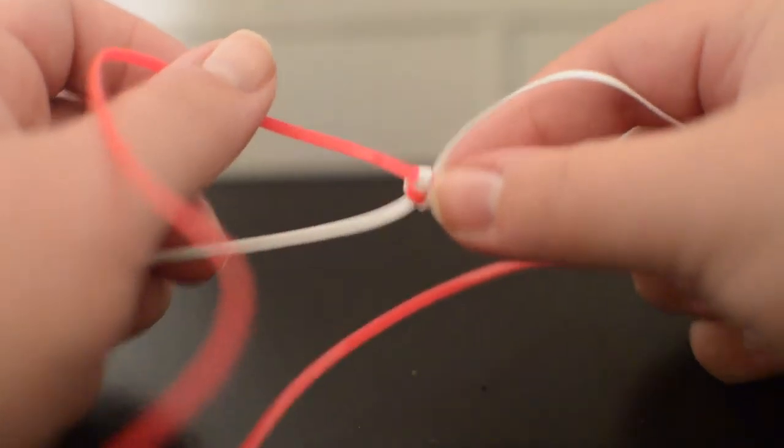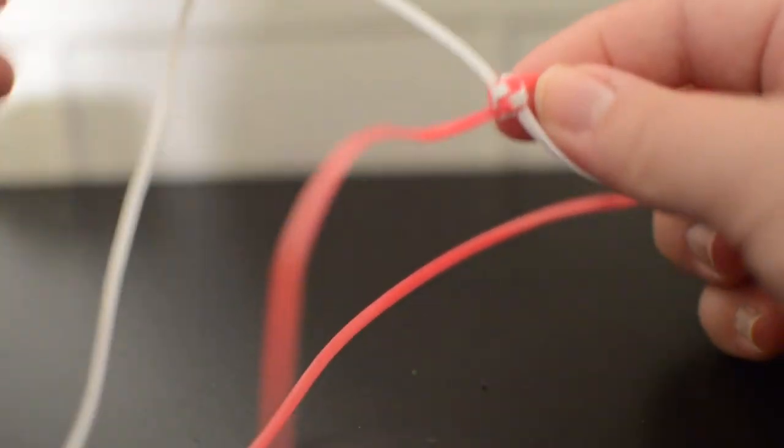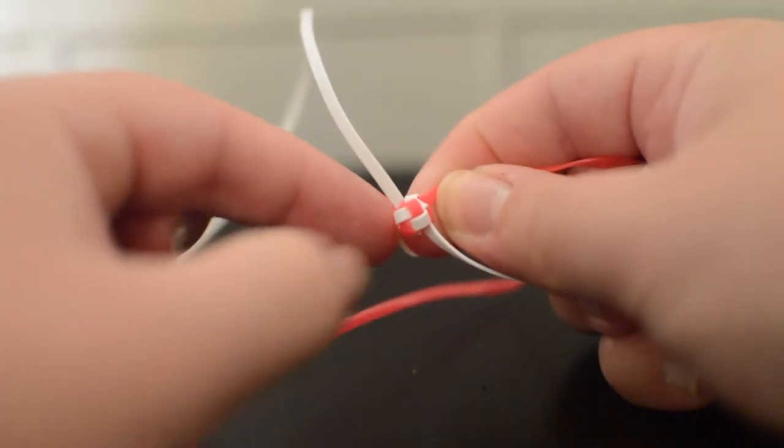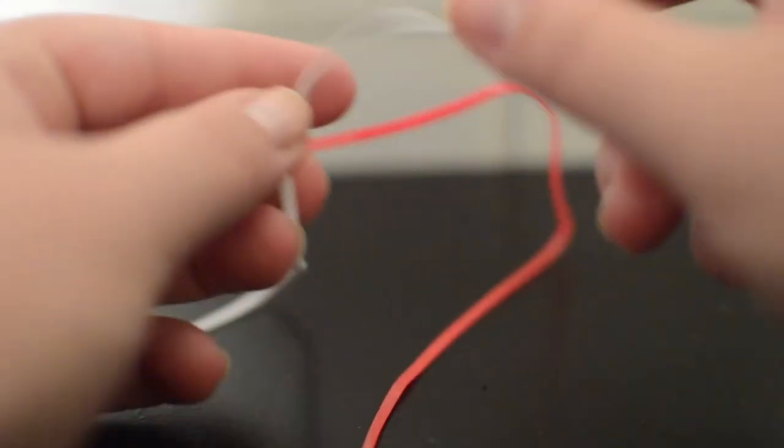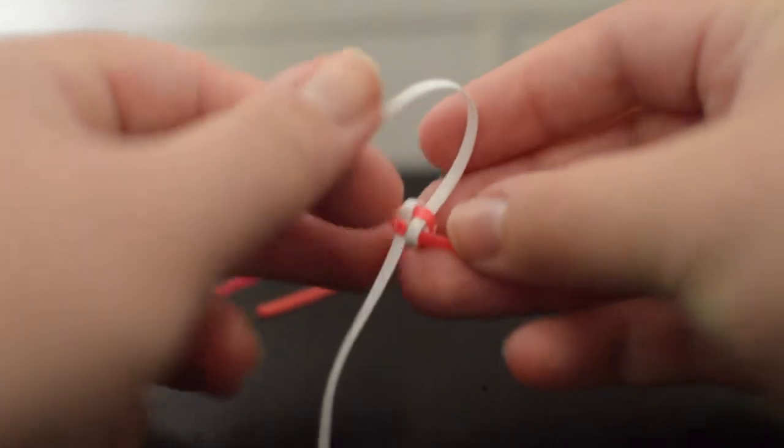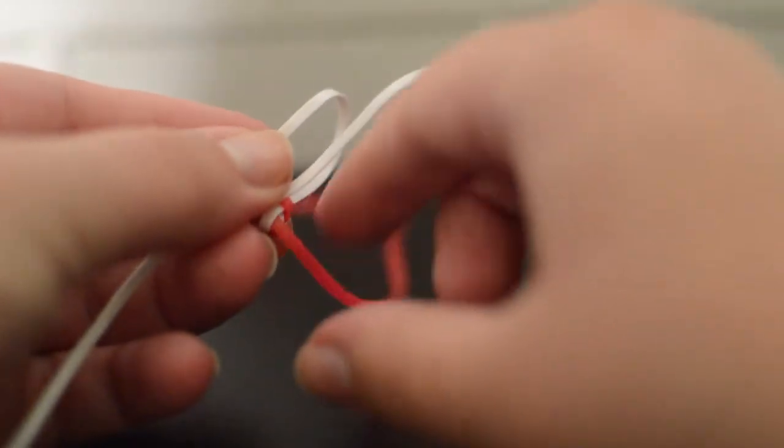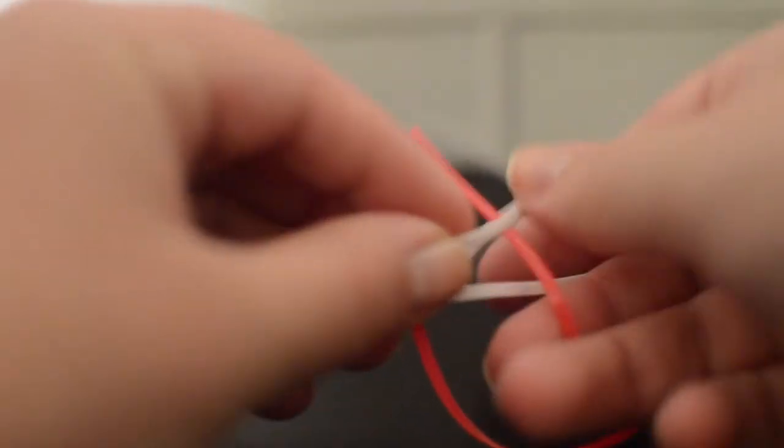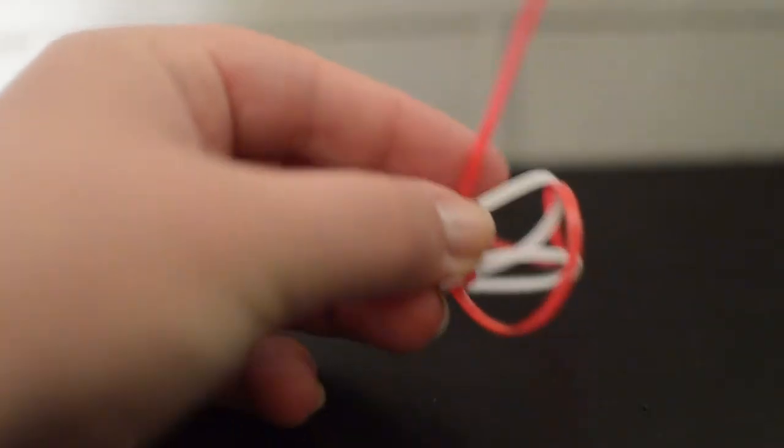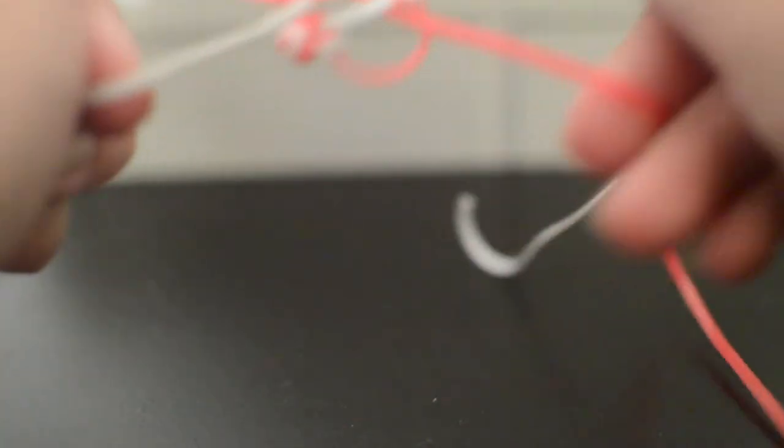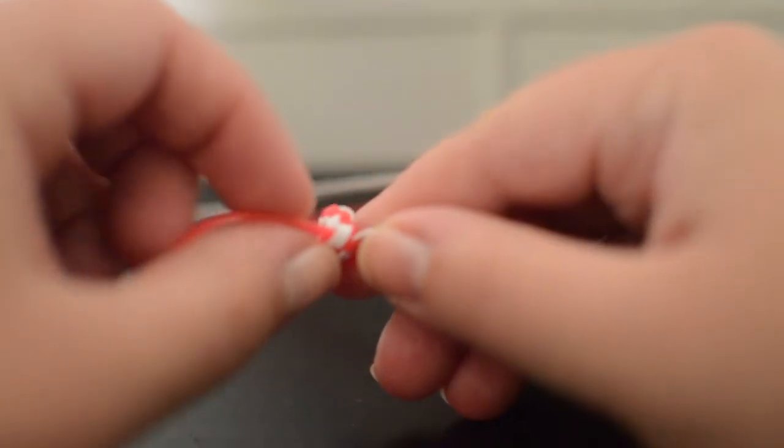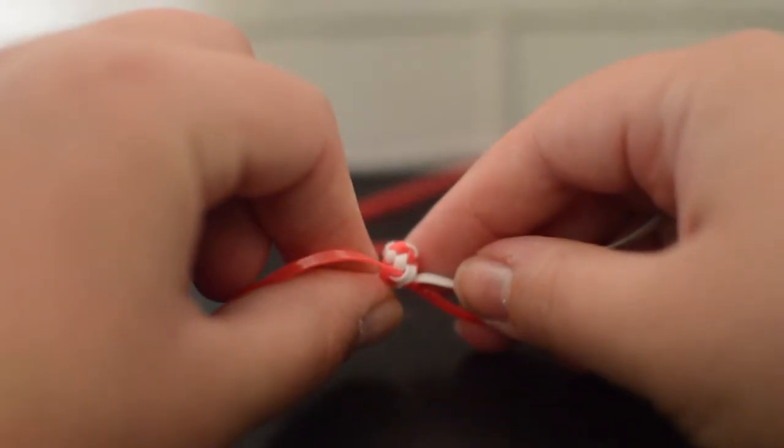Now you've got this nice boxy looking stitch on the top and it's going to start going to the side. So I'm going to do that again where I go to this side and then I go to that side. I take my one across from here and go over and under, and then I take this one and go over and under. I'm going to pull all of them, those big loops nice and tight.